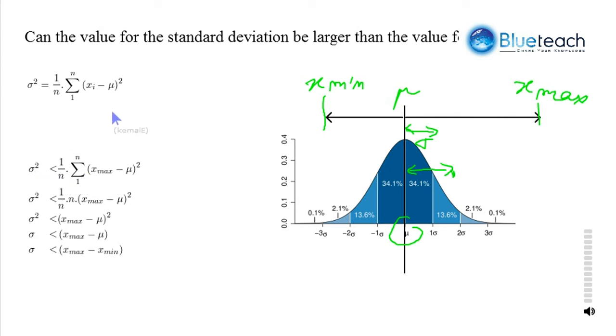In this case, xi minus mu, the distance of any observation, because it's within that range, to mu cannot be bigger than that distance.